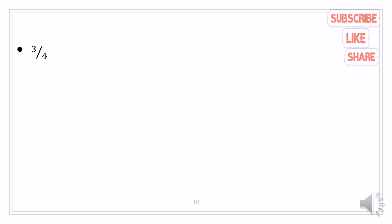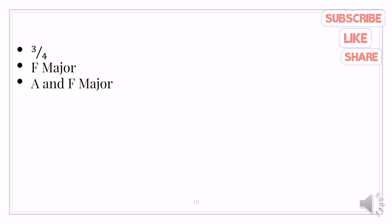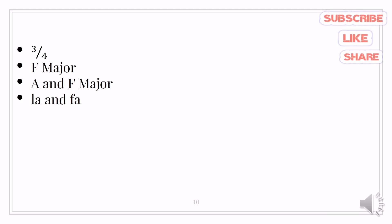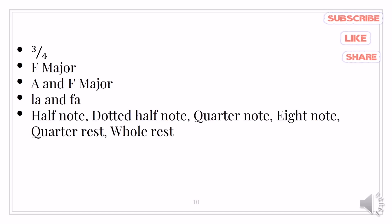Let's check the answers. The time signature of 'Dignity of Labor' is 3/4. The key of the song is F. The first and last note of the song are A and F. The first and last solfège syllable of the song are LA and FA. The kinds of notes and rest found in the musical score are: half note, dotted half note, quarter note, eighth note, quarter rest, and whole rest.